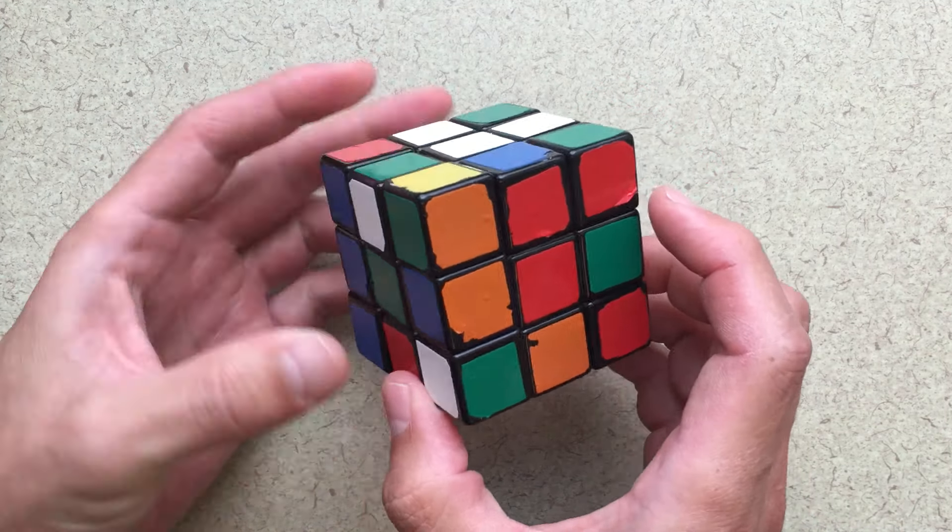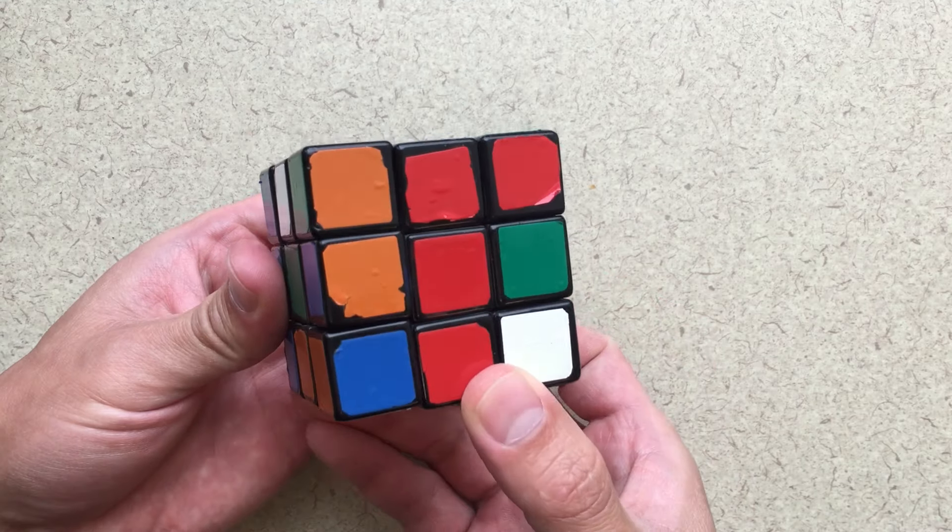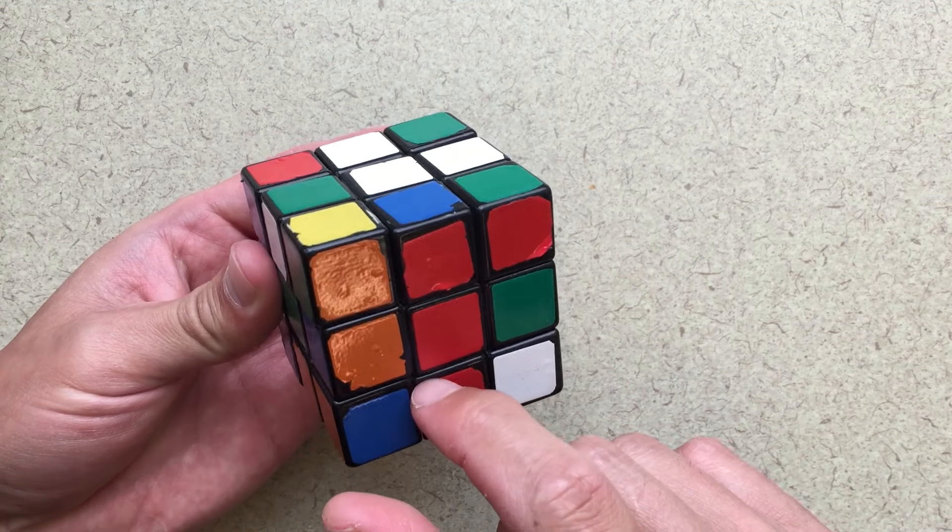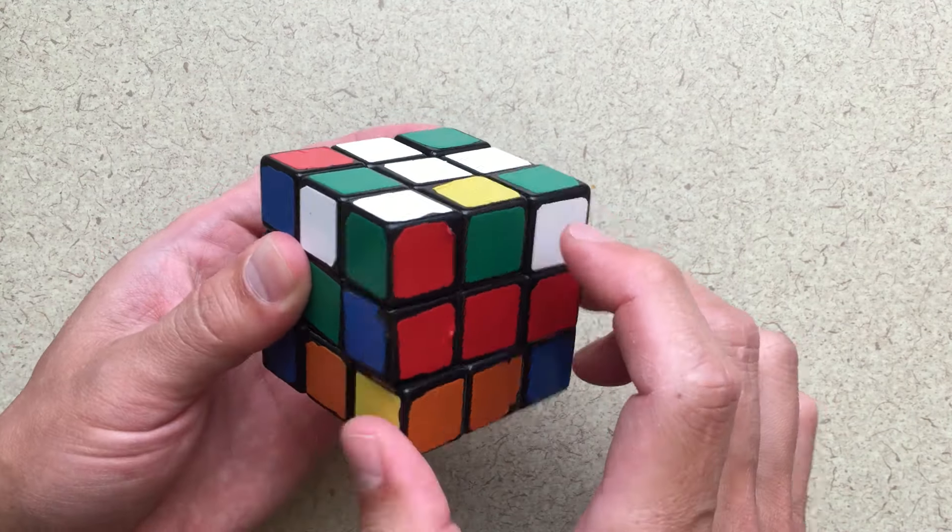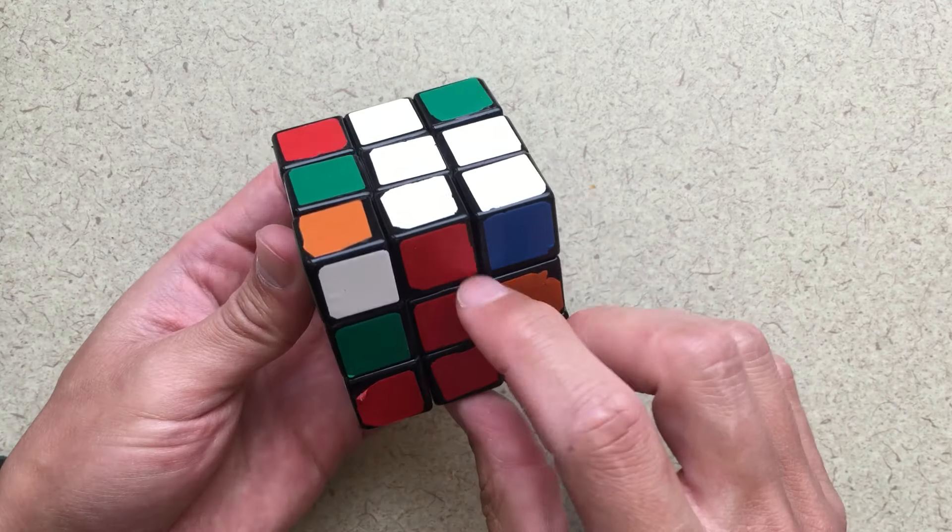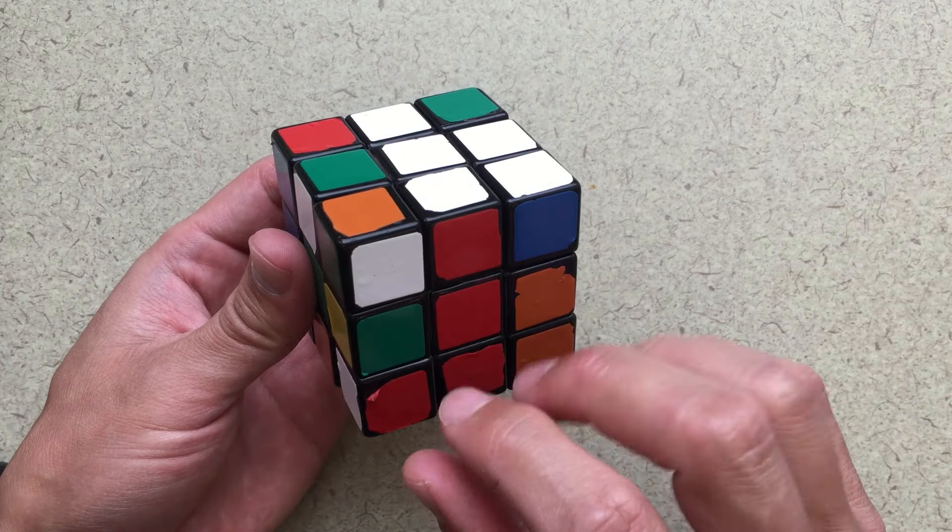So remember I want to put it here, and then turn this bottom face so that the red is lined up. Now all I need to do is turn this all the way over, and that will put that piece where I want it in that spot.